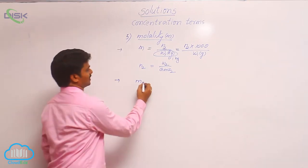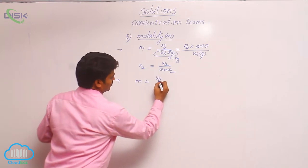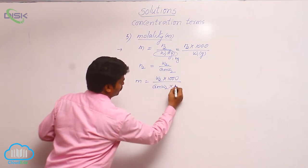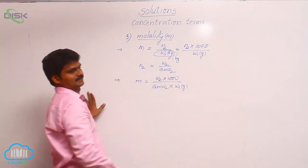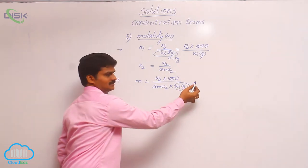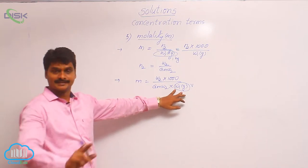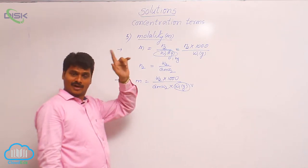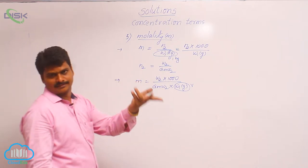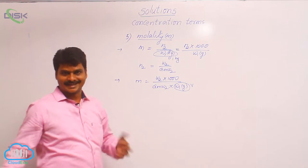Another formula for molality: m = weight × 1000 / (gram molecular weight of solute × weight of solvent in grams). In the case of molarity, we use volume in milliliters, but here we use weight of solvent in grams — that is the difference. In molarity, it is moles of solute per liter of solution; here it is moles of solute per kg of solvent.